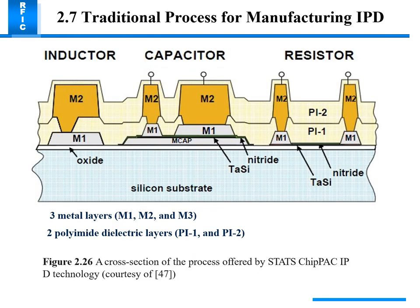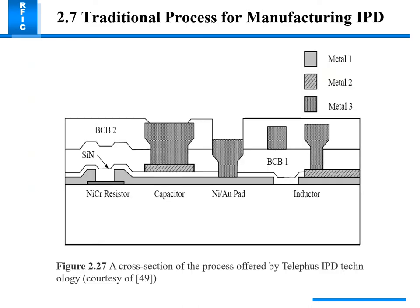The Freescale IPD technology uses three metal layers M1, M2, M3 to fill the capacitor and emit dielectric layers P1, P2, with inductor, capacitor, and resistor connected together. The Telephus IPD technology cross-section shows nickel-chromium resistor, capacitor, nickel gold pad, and inductor, with silicon nitride and three metal layers of different widths.